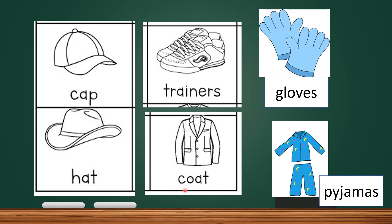Coat. Coat. C-O-A-T. Coat is a clothing item with sleeves that people wear outdoors, typically extending below the hips — meaning it is longer than a usual shirt or jacket.